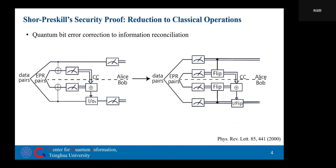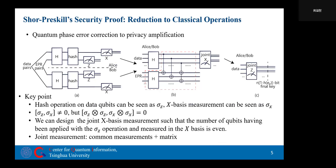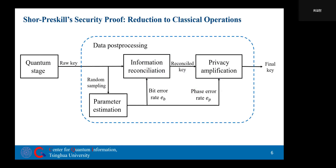Later, in 2000, Shor and Preskill further used the commutation property of measurement and quantum error correction operations to transform quantum bit error correction into information reconciliation. Meanwhile, they also transformed the quantum phase error correction into private amplification by introducing joint measurements. In this way, the post-processing of quantum key distribution becomes what we are now familiar with.